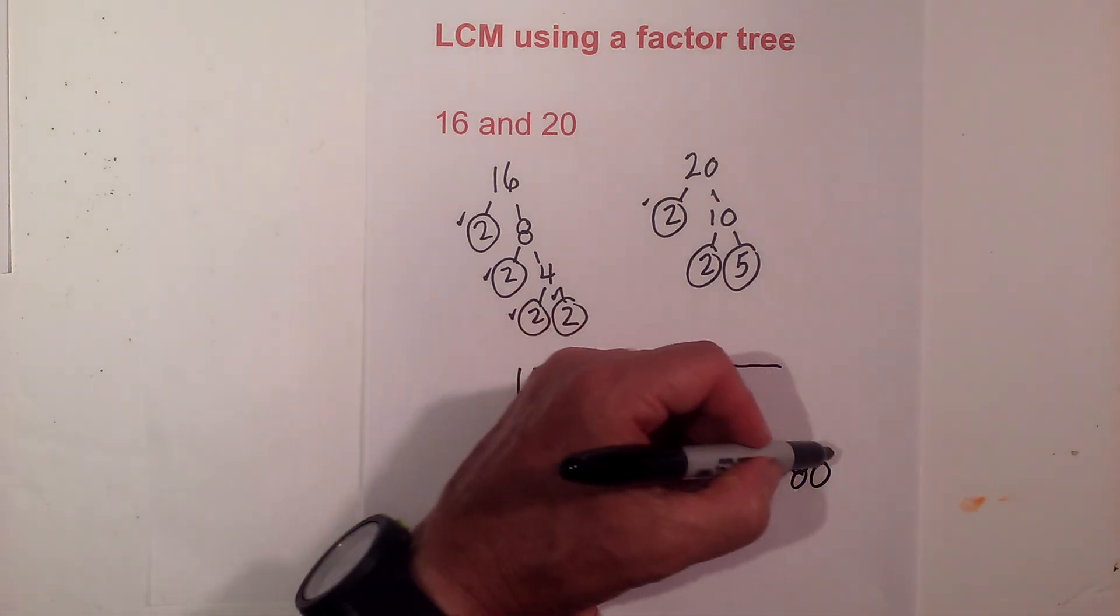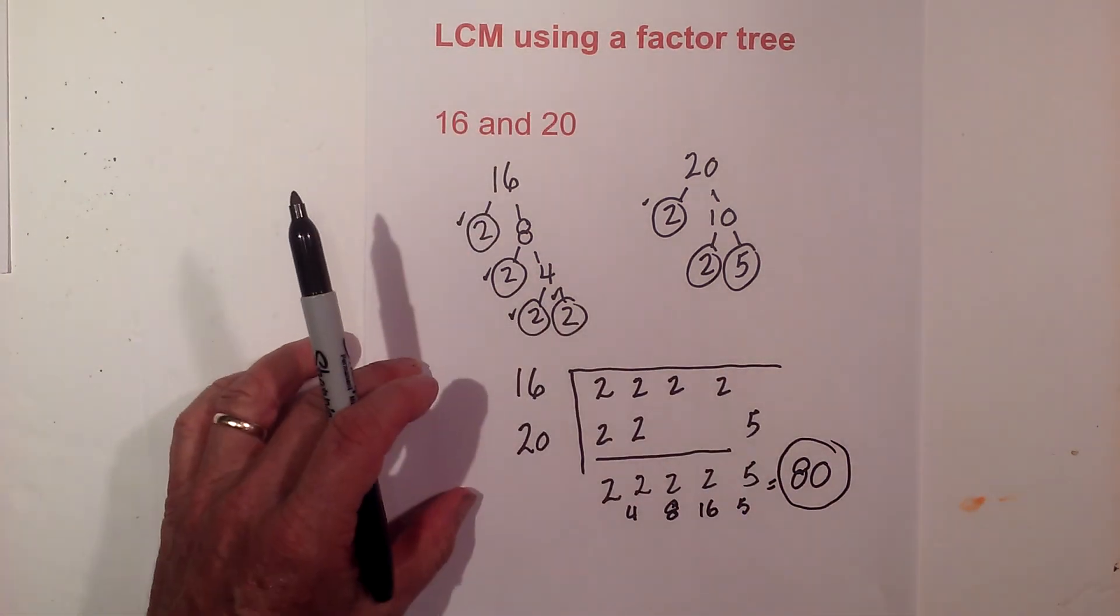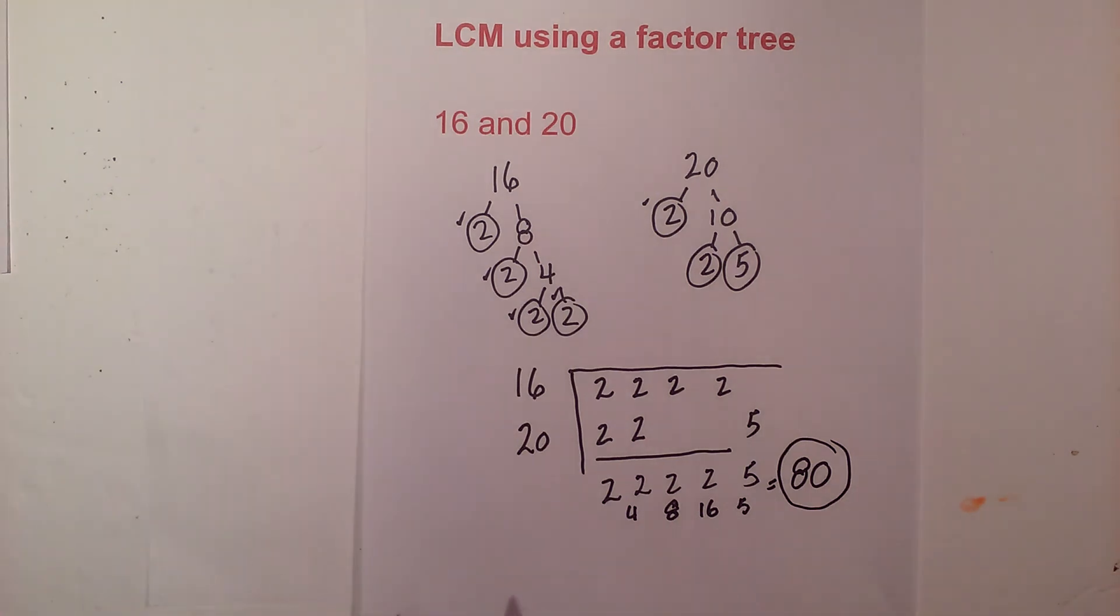So the least common multiple, or the LCM, of 16 and 20 equals 80.